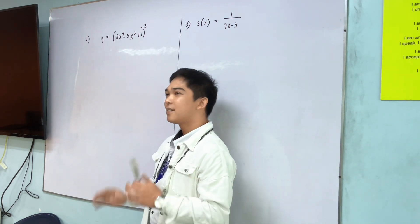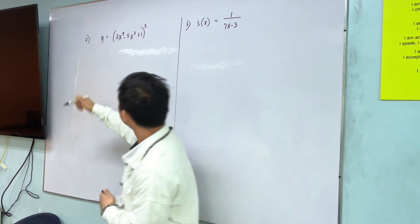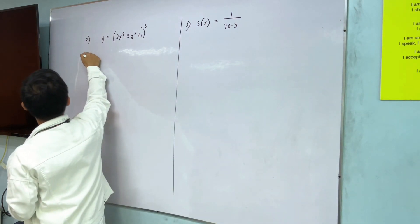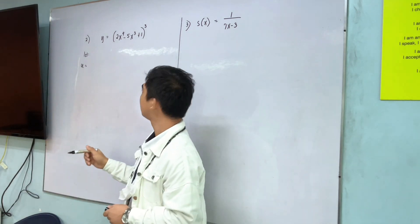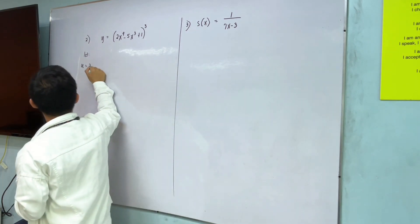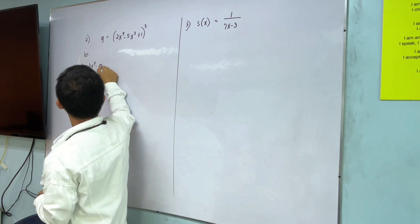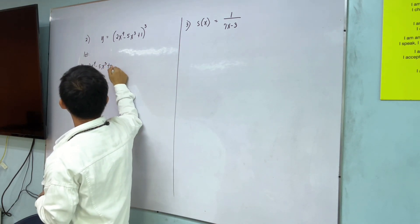Sorry. First step? Let u be equal to 2x raised to 4, 2x raised to 4, minus 5x cubed plus 1.